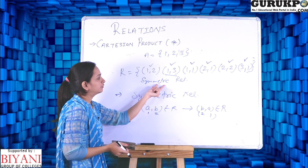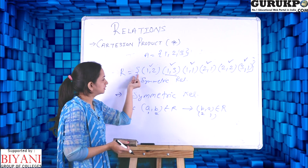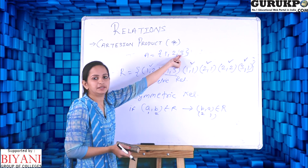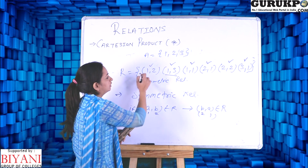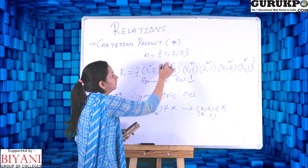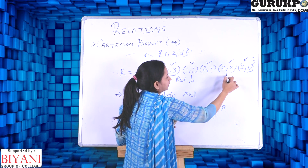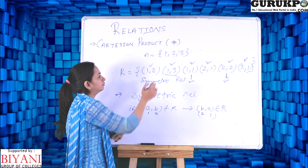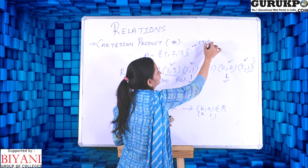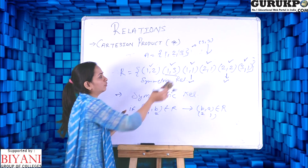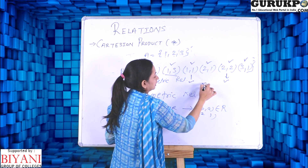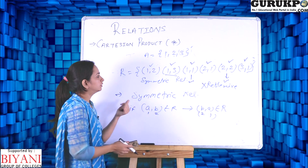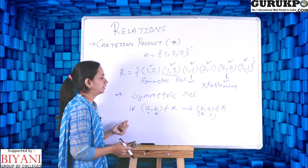Let us also check whether this same relation is reflexive. For reflexive, each and every element of set A must be related to itself. Element 1 has (1,1) — condition satisfied. Element 2 has (2,2) — condition satisfied. But element 3 does not have (3,3) in the relation set. Since (3,3) is missing, this relation is not reflexive. So this relation is symmetric but not reflexive.